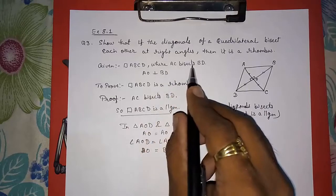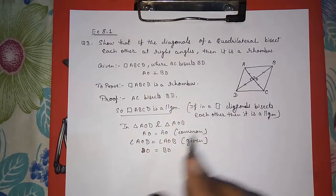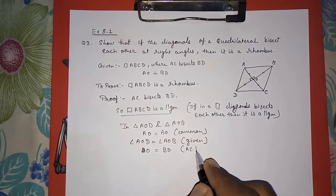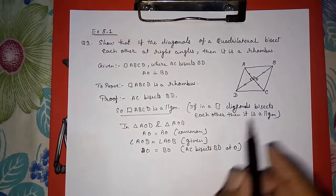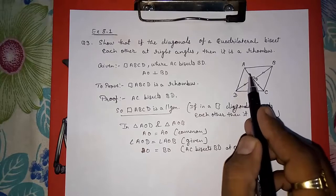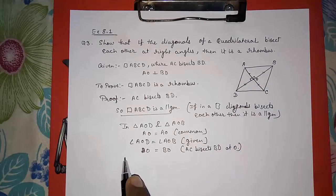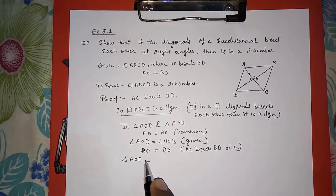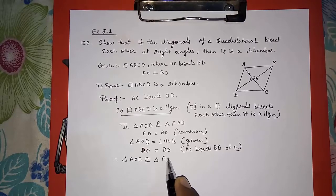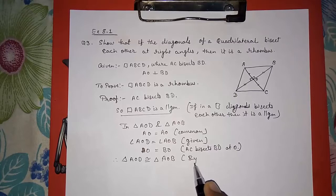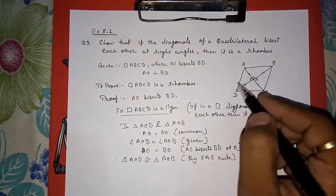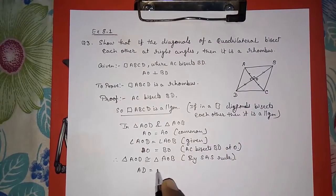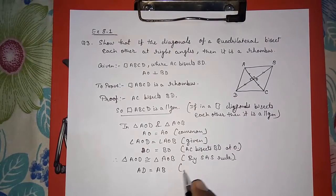Since AC bisects BD at O, DO is equal to BO. Therefore, by the Side-Angle-Side (SAS) rule, triangle AOD is congruent to triangle AOB. Since they are congruent, we can say AD is equal to AB by CPCT.